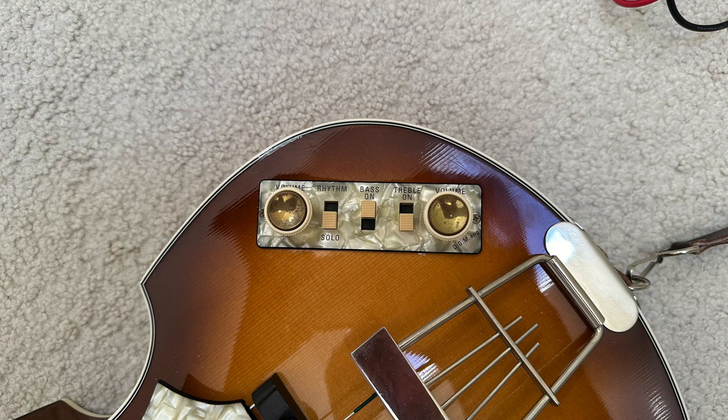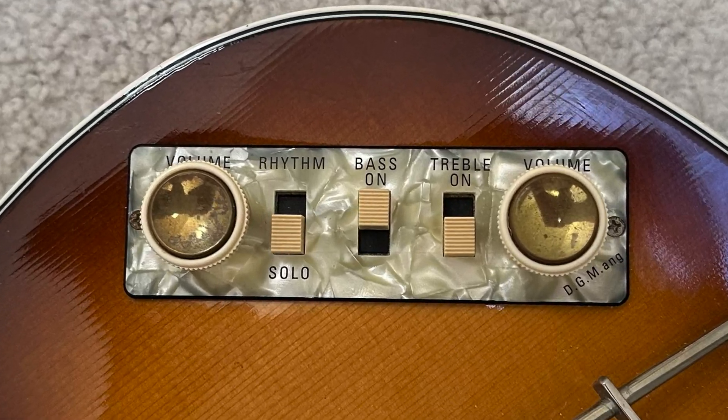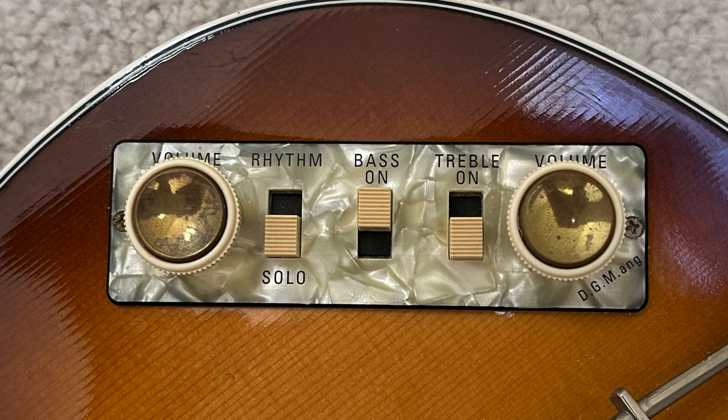We'll start with the view of the panel by the guitarist. From that view, the bridge volume knob is on the right, the neck volume on the left. And to turn on rhythm and the pickups, you move the switches down, completely labeled and logical.